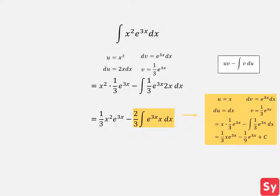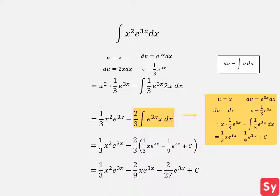We will now substitute the answer for this integral back in. We can simplify this answer and get 1 third times x squared times e to the 3x minus 2 ninths times x times e to the 3x minus 2 over 27 times e to the 3x plus c.